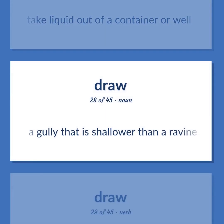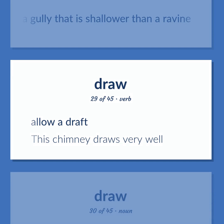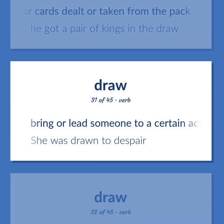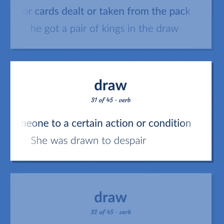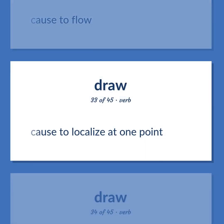A gully that is shallower than a ravine. Allow a draft. This chimney draws very well. A playing card or cards dealt or taken from the pack. He got a pair of kings in the draw. Bring or lead someone to a certain action or condition. She was drawn to despair.